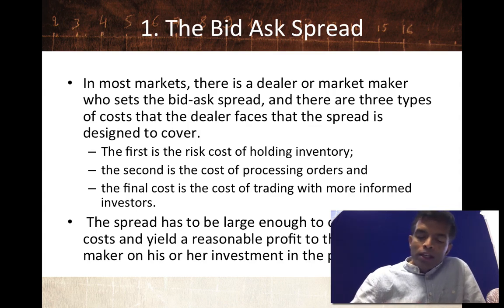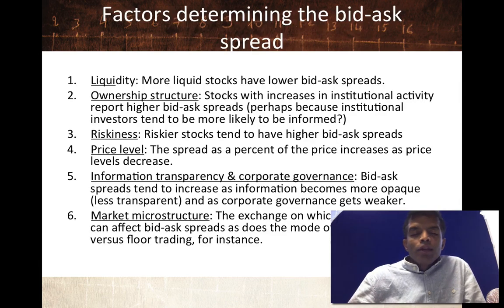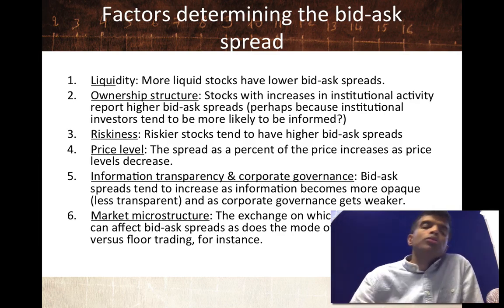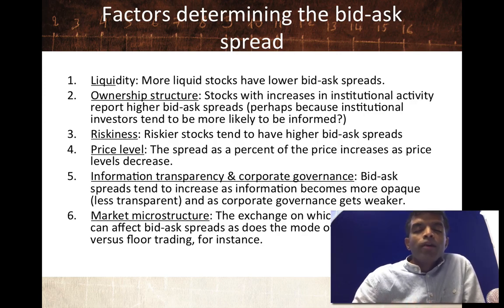So what does the dealer have to do? He has to set the bid-ask spread large enough that it covers these costs — cost of holding inventory, cost of processing orders, cost of trading with more informed investors. If you dig a little deeper and look across U.S. stocks, you'll notice that the spread as a percentage of the stock price varies widely across stocks.